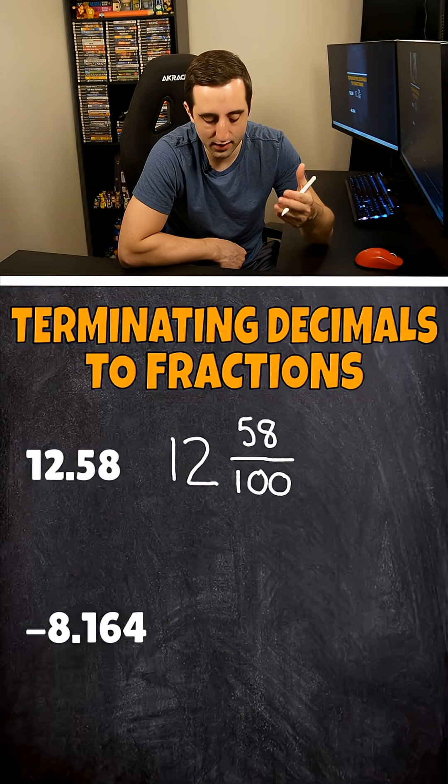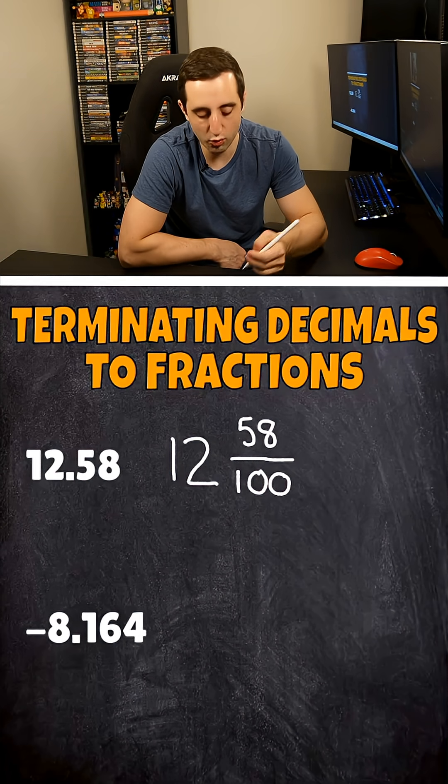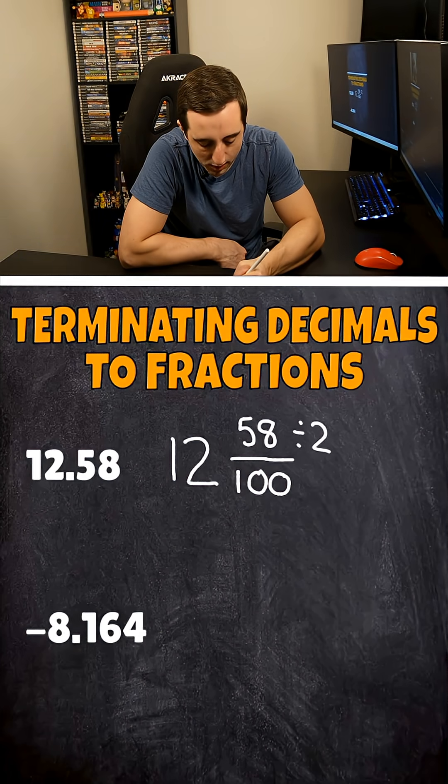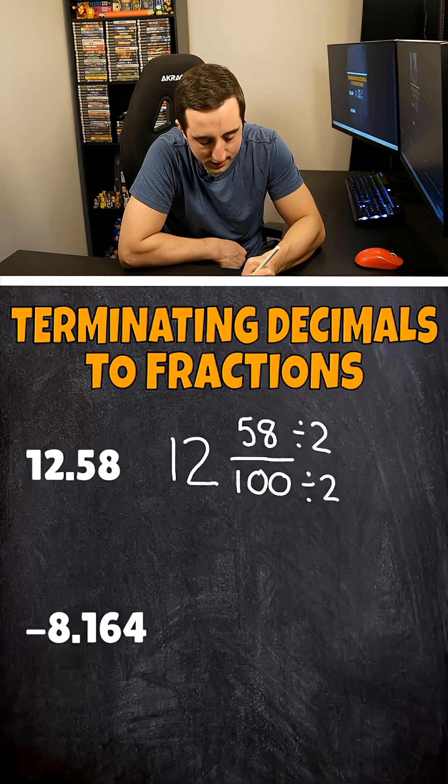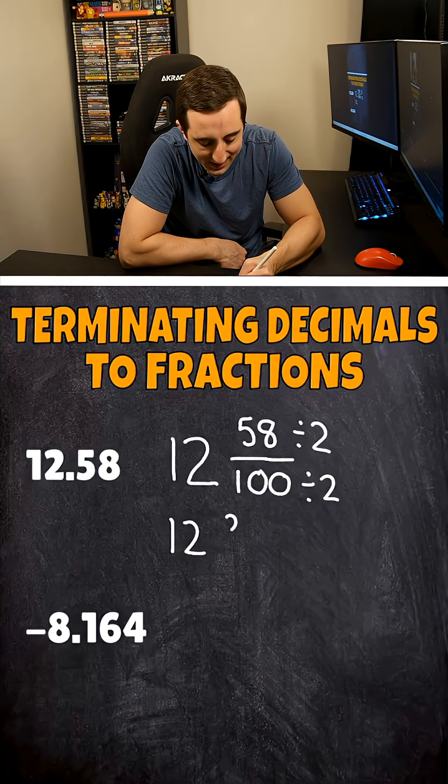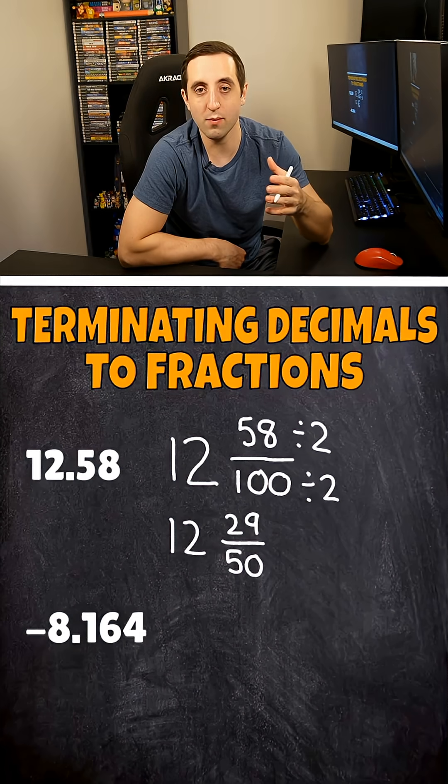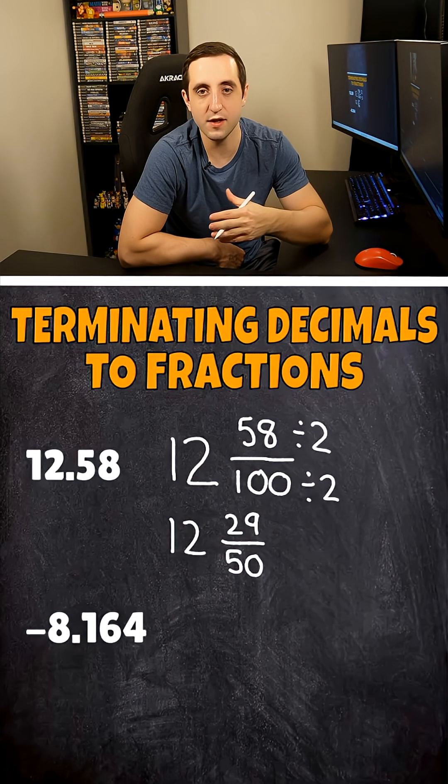But we can simplify this a little bit. 58 and 100 are both divisible by two. So let's go ahead and simplify this by dividing the top and bottom by two. And we end up getting 12 and 29 fiftieths for our fraction in simplest form for the first one, 12 and 29 fiftieths.